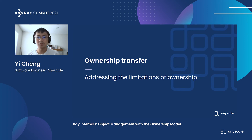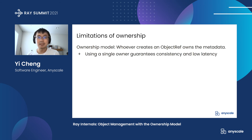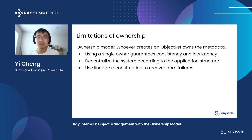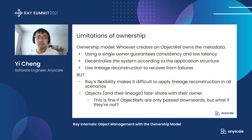Thanks, Stephanie, for the great talk about the ownership model. I will talk about ownership transfer and how it addresses the limitations of the ownership model. In the ownership model, whoever creates an object owns the metadata. As Stephanie mentioned, there are a lot of benefits from this — like it guarantees consistency and low latency, it decentralizes the system according to the application structure, and it can use lineage reconstruction to recover from failures. But there are also some limitations. Like lineage reconstruction cannot be applied to all scenarios, and an object is fate-sharing with its owner.